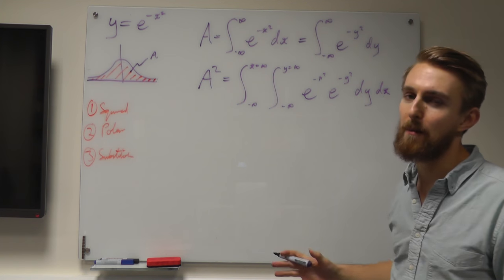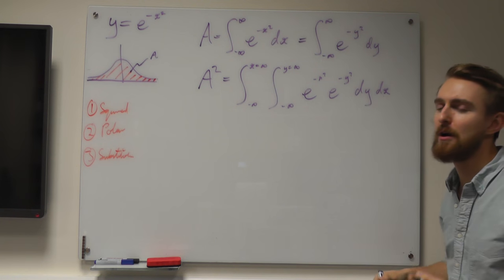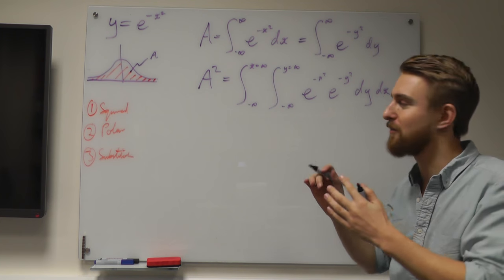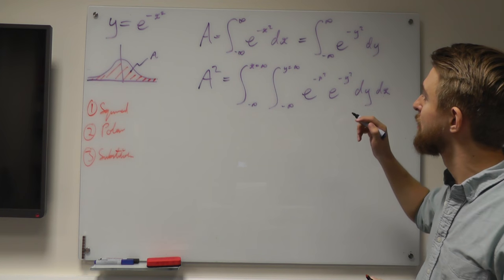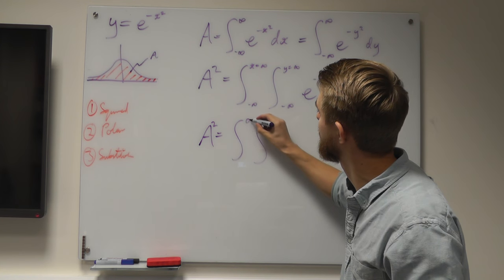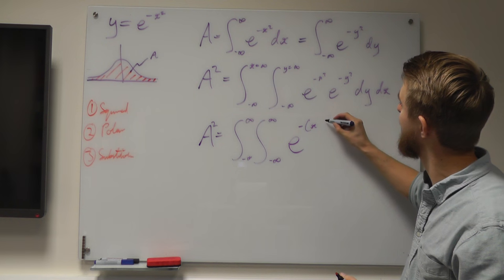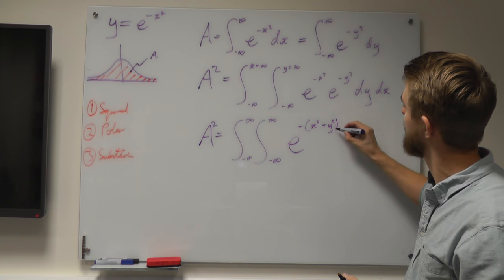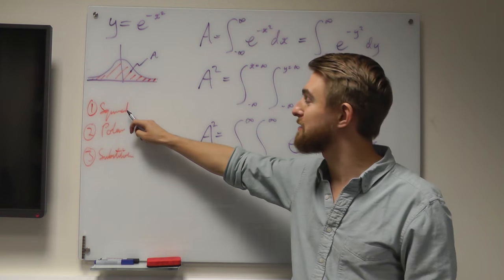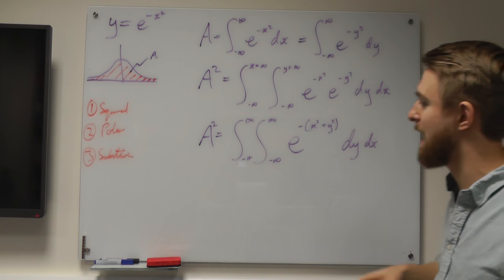You might be thinking: how come, when I multiply those together, I'm allowed to just put the y term inside the x integral and the x term inside the y integral? The reason for that is that this term doesn't have any y's in it — it's not a function of y — so it doesn't matter if it's inside the integral, and obviously vice versa with the y term. Just with our knowledge of exponents, we can rewrite this as A squared equals the double integral with minus infinity limits of e to the minus x squared plus y squared, dy dx. And that is the end of the squared step — we've just re-expressed it in terms of these two independent variables, x and y.